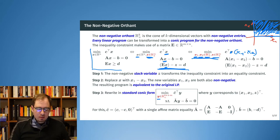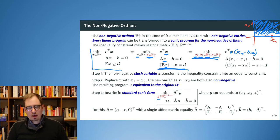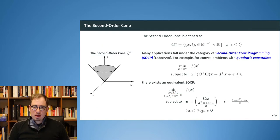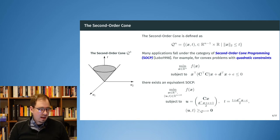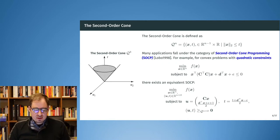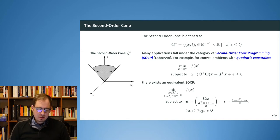So every linear program can be rewritten in the standard conic form for the non-negative orthant. Now we come to optimization problems that we weren't able to solve in a nice fashion before, and for that we need the more advanced cones — for example, the second-order cone. The second-order cone is rather simple.